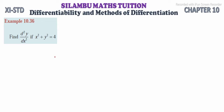Hi students, this is Selamba Makstitution 11th standard example 10.36. Find d squared y divided by dx squared if x squared plus y squared is equal to 4. d squared y divided by dx squared is the second derivative, that is y double dash — the value that we require.